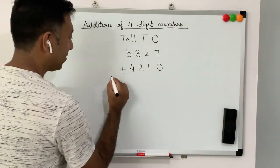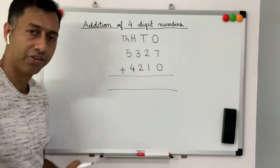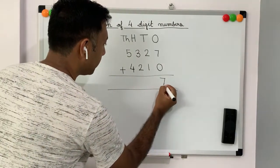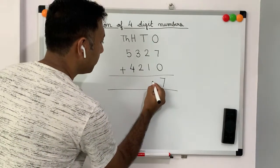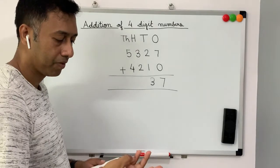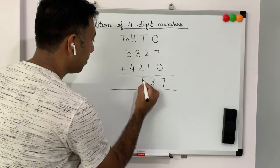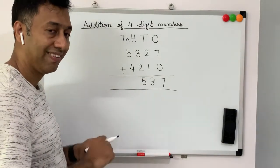Now, let's try to add these again. So, 7 plus 0 is 7. 2 plus 1 is 3. 3 plus 2 is 5. And 5 plus 4 is 9.